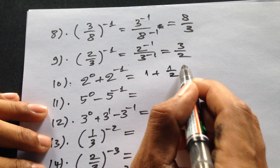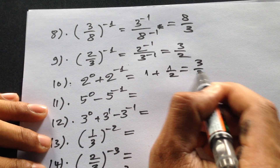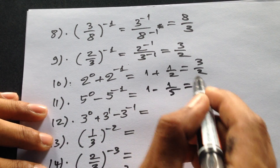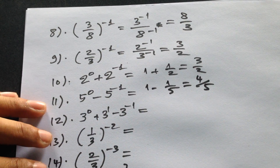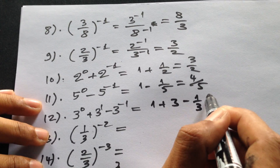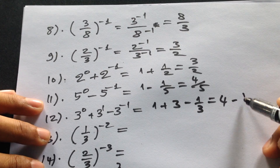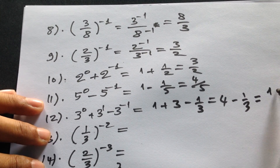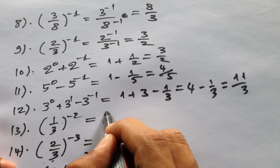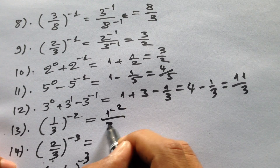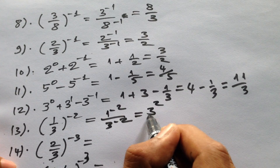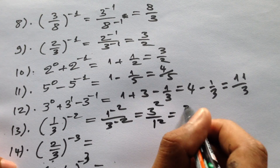How about this? It will be 1 plus 1 divided by 2, so it will be 2 divided by 3. How about this? It will be 1 minus 1 divided by 5, so it will be 4 divided by 5. How about this? It will be 1 plus 3 minus 1 divided by 3, so it will be 4 minus 1 divided by 3, which is 1 divided by 3. How about this one — 1 minus 2 over 3 minus 2 — it will be 3 to the power 2 divided by 1, so 3 squared equals 9.